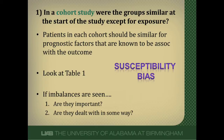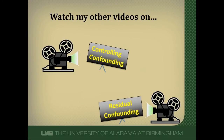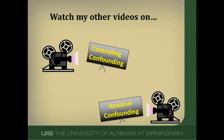If you do see these differences and they are important, they need to be dealt with in the analysis phase. And finally, you always need to ask yourself: what else is missing? Looking at table one, are there any demographic or clinical factors the authors didn't report on or measure that could be important for the outcome? We call this residual confounding. At this point, you may want to watch my other videos on controlling confounding and residual confounding.